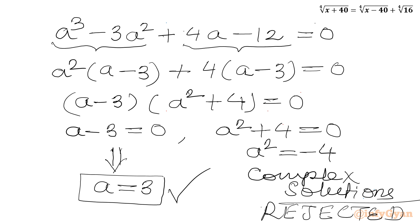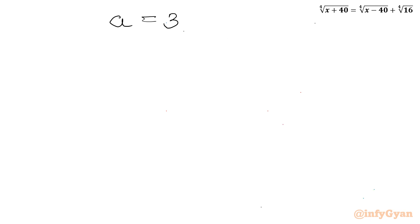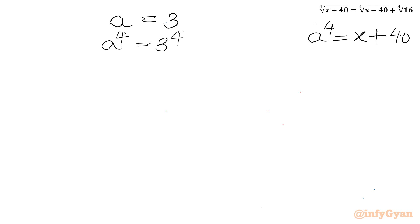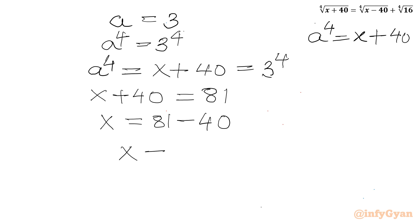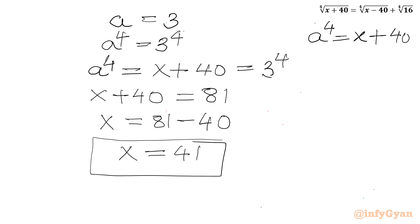So a equals 3 is the accepted solution. Recalling our substitution, a⁴ equals x plus 40. Raising both sides to the 4th power: 3⁴ equals x plus 40, so 81 equals x plus 40, which gives x equals 81 minus 40, or x equals 41. Therefore x equals 41 is the only real solution satisfying our radical equation.